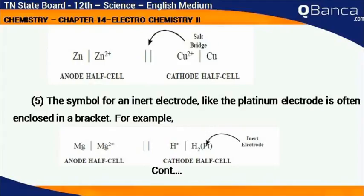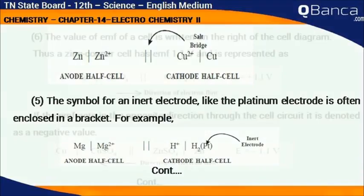The symbol for an inert electrode, like the platinum electrode, is often enclosed in brackets. For example, H₂ | Pt is written with Pt in brackets.